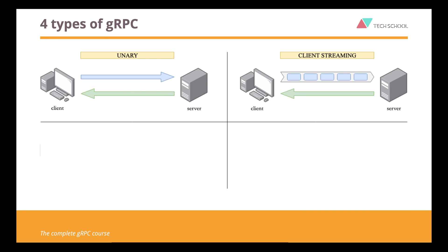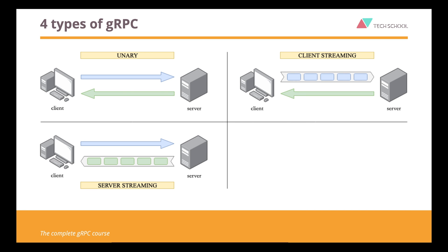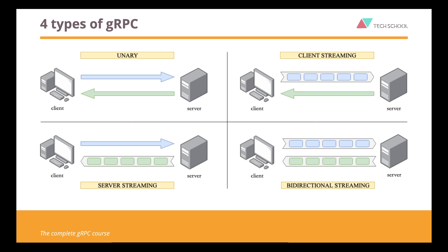Similarly, we have server streaming, where the client sends only one request message and the server replies with a stream of multiple messages. And finally, the bi-directional or bi-di streaming. This one is the most complex, because the client and the server will keep sending and receiving multiple messages in parallel and with arbitrary order. It's very flexible and non-blocking, which means no side needs to wait for the response before sending the next message.